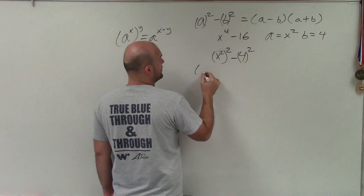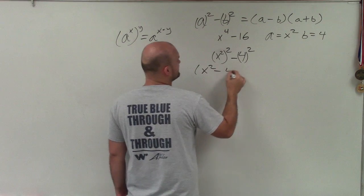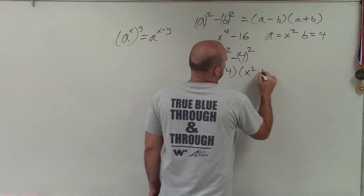So now, just applying my difference of two squares, I can say x squared minus 4 and x squared plus 4.